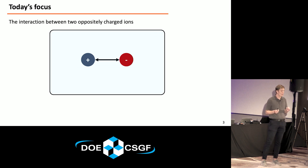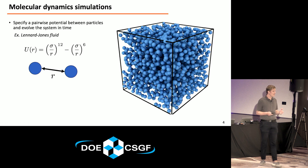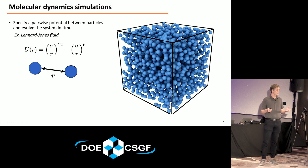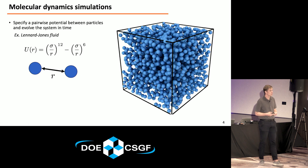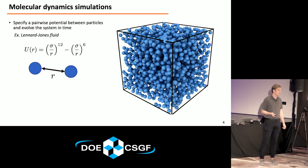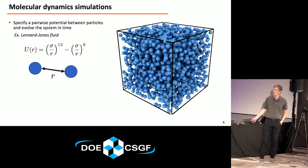I'll give some background on molecular dynamics. The basic idea is you put particles — they could be atoms or some representation of a particle — in a box. You specify some interaction potential, usually a pairwise potential between the particles, and then you let them go and satisfy Newton's equations of motion. The simplest example is a very common Lennard-Jones potential in some simulation box. You can calculate the forces based on the gradient of that potential.